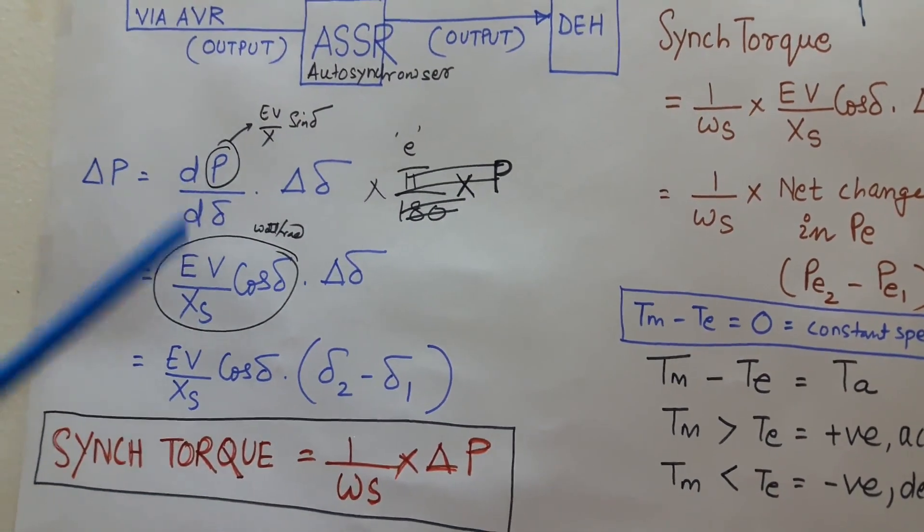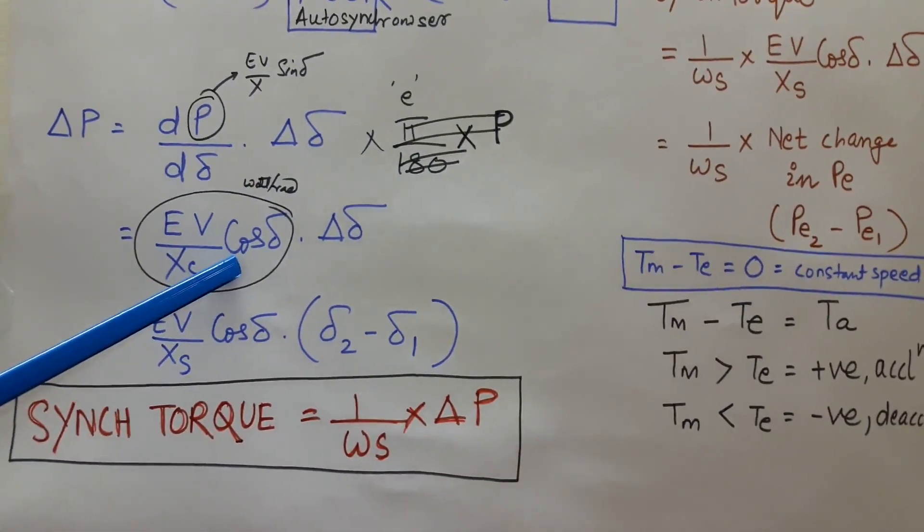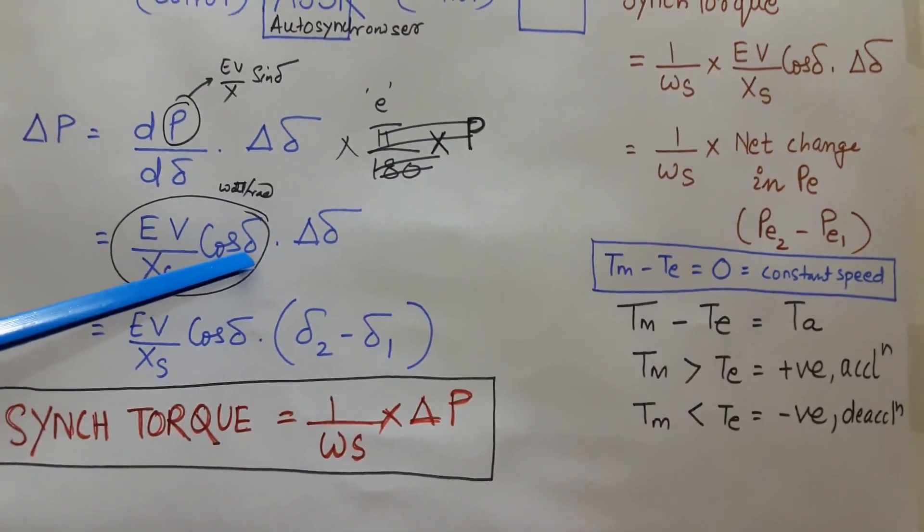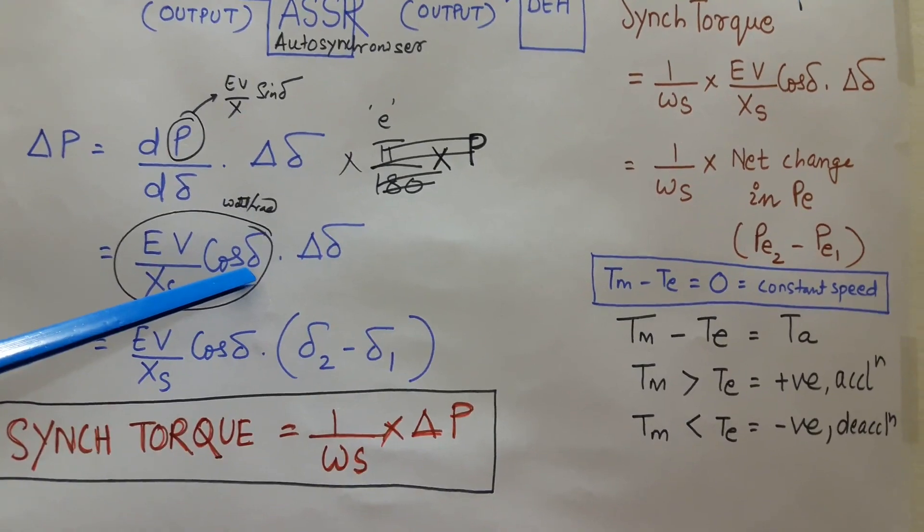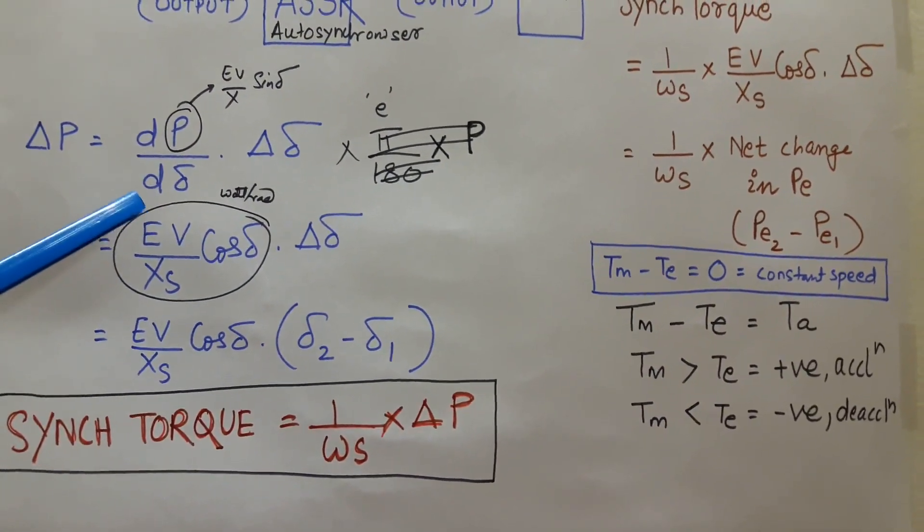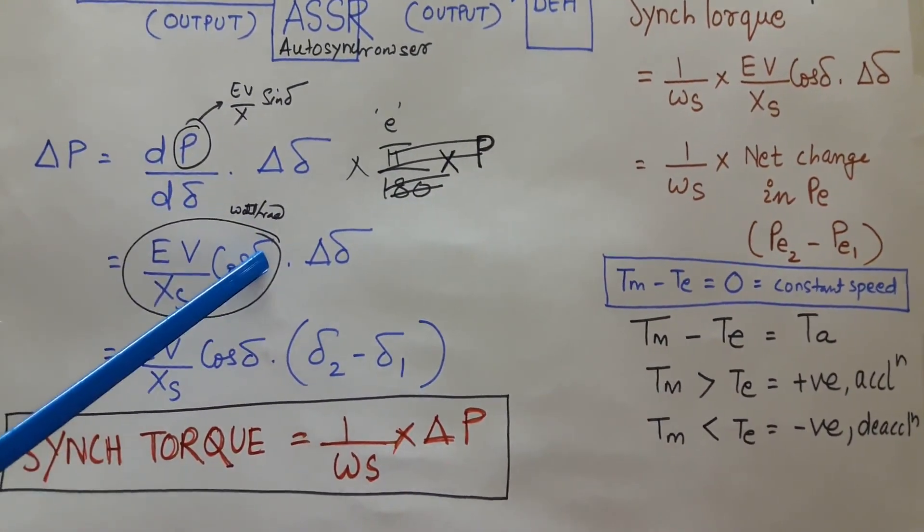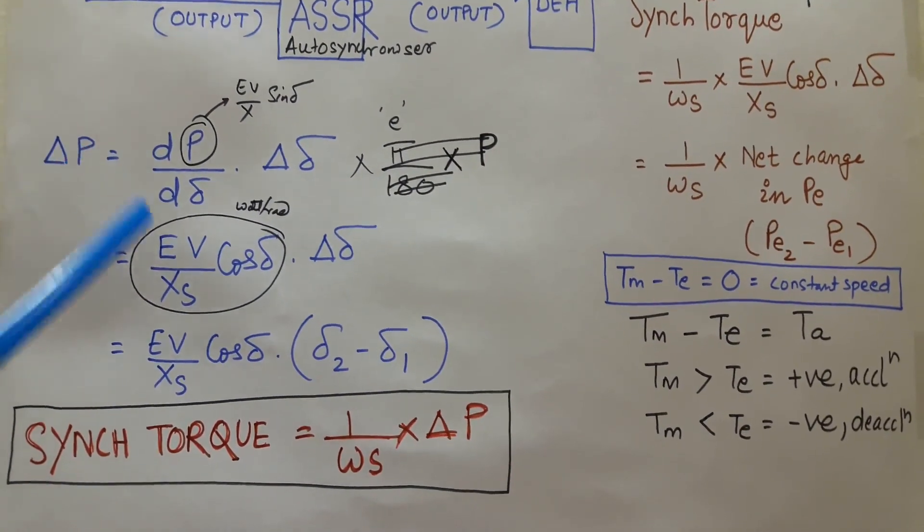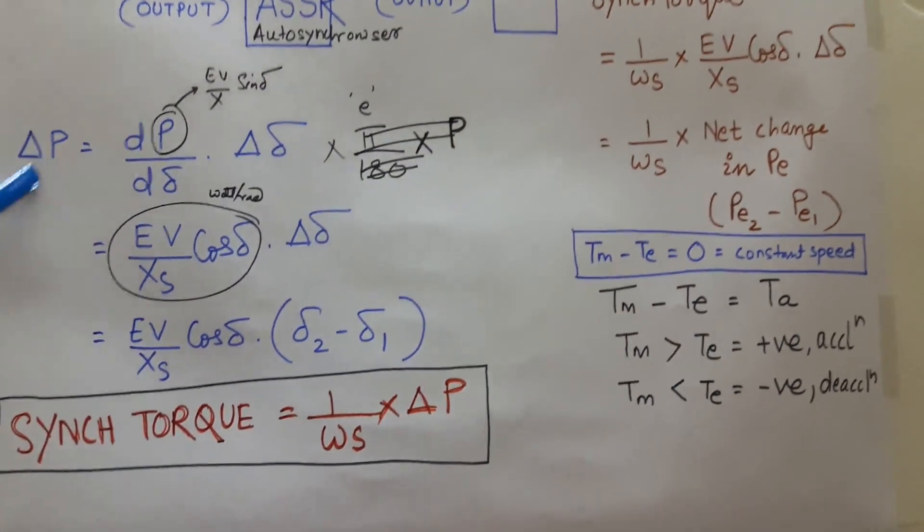So this is the derivative, EV by X cos delta. This is also known as the synchronizing coefficient, power coefficient. Here you can see more the load angle will be there, if load angle advancement will be more, the cos delta term will be less. So we are going away from the synchronism. So that is why this is nothing but the rigidity between stator and rotor, the locking between stator and rotor. This coefficient, and when this coefficient is multiplied with the change in angle, the net term is known as synchronizing power. So EV by X cos delta multiplied by delta 2 minus delta 1 will become the synchronizing power.